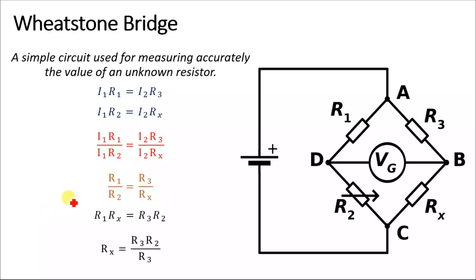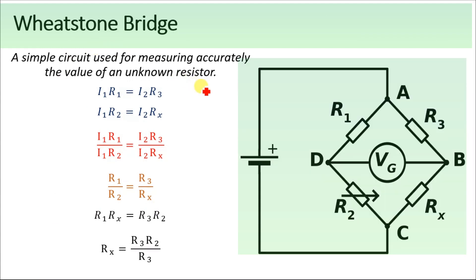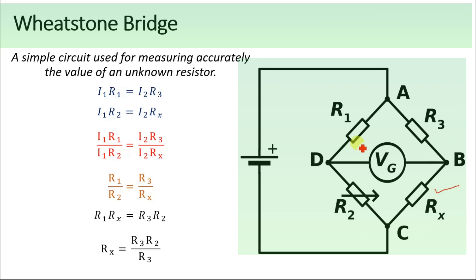Welcome to EZEDU. Today we are going to discuss the Wheatstone Bridge. The Wheatstone Bridge is a simple circuit that is used for the calculation of an unknown resistor. This simple circuit consists of four resistors: two fixed resistors, one variable resistor, and the fourth one is an unknown resistor. Using this simple circuit we can calculate the value of this unknown resistor.